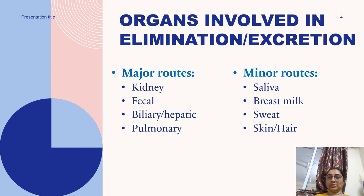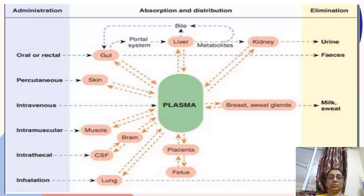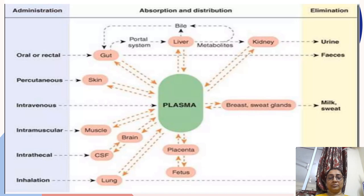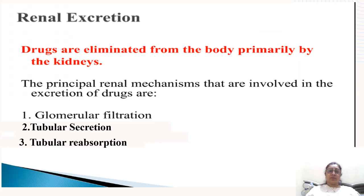Minor routes include salivary, breast milk, sweat, and skin or hair. These are the various routes of drug elimination. Administration of a drug by any route — oral, rectal, percutaneous, intravenous, intramuscular, intrathecal, or inhalation — all drugs go into plasma and are excreted through various routes like urine, feces, milk, sweat, and through the lungs.